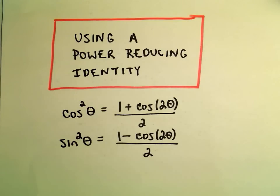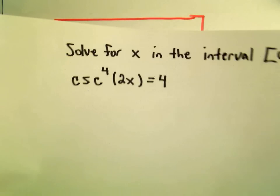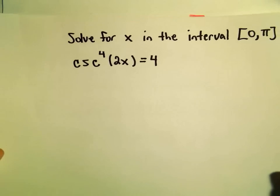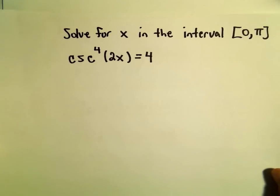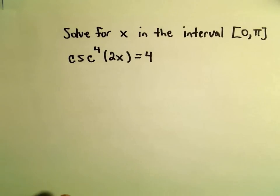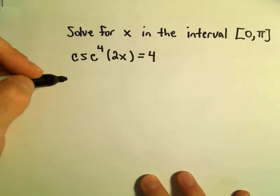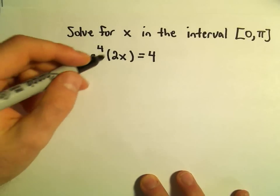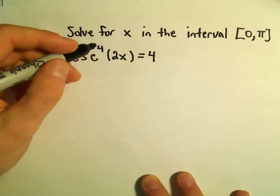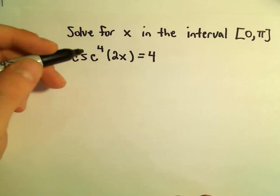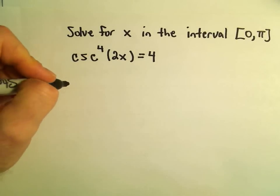We're going to make use of this idea of reducing a power to solve a trig equation. Suppose we have cosecant to the fourth of 2x equals 4. Let's try to sort of reduce the exponent here.